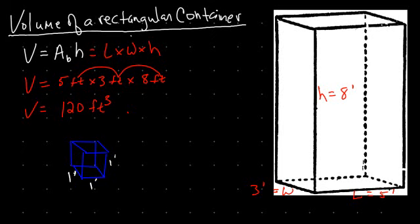so saying that this box has a volume of 120 cubic feet means that 120 of these little 1x1x1 cubes could fit into that box, that 120 of these can contain the same amount of, let's say, water that this box right here will contain.